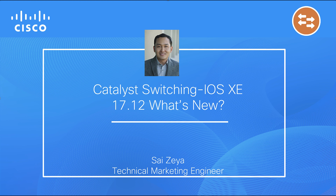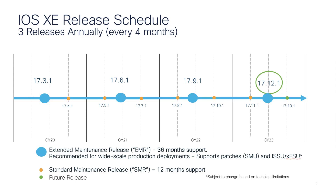Cisco brings the new software release IOS XC 17.12, which offers a suite of new software features and introduces new hardware in the Catalyst 9000 portfolio. This is the extended maintenance release for all Catalyst 9000 platforms.